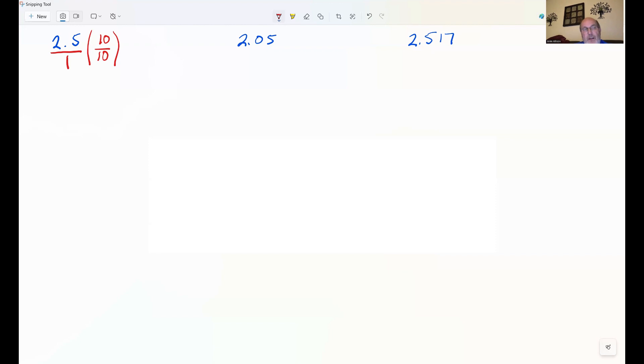So effectively, when we write 2.5 over 1 times 10 over 10, we're multiplying 2.5 by 1, because 10 over 10 is 1.